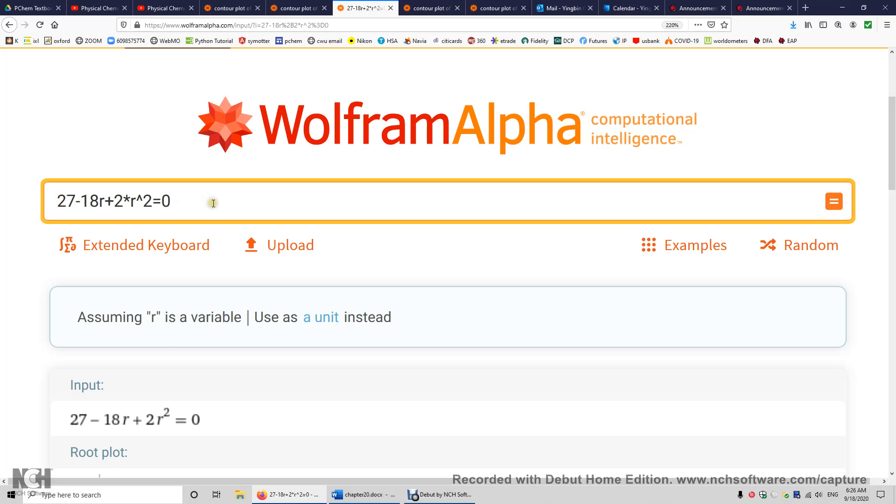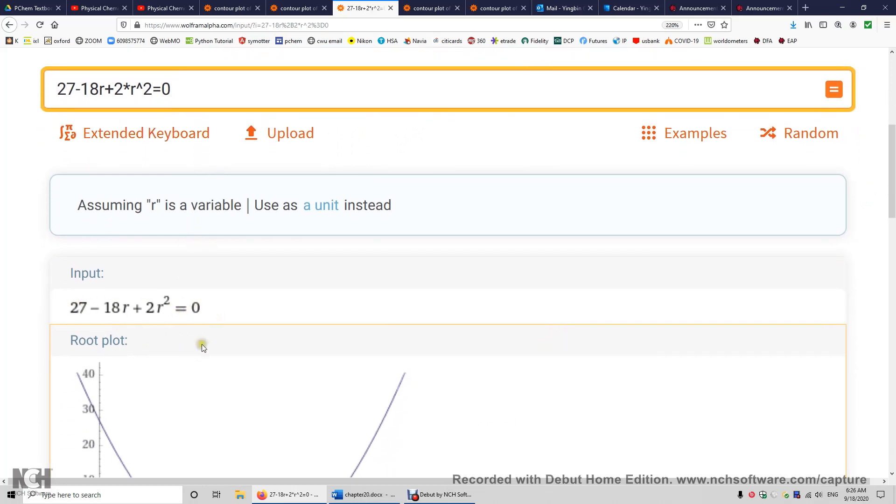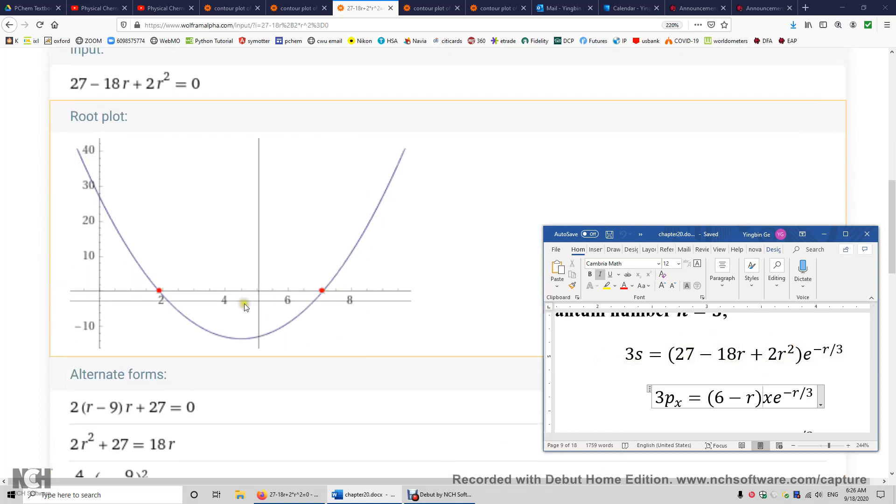Anyway, you can also use WolframAlpha to calculate the positions of the two spherical nodes by entering this and hit equal sign or hit enter. When you set this equation to zero, part of the 3s wave function, you get two roots, 1.9, 7.1. Alright?